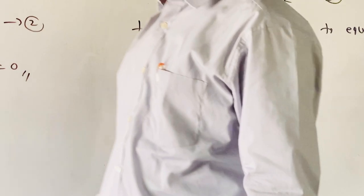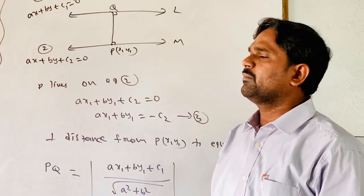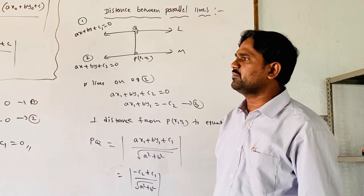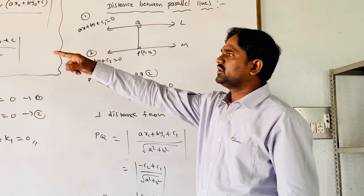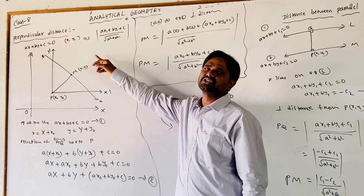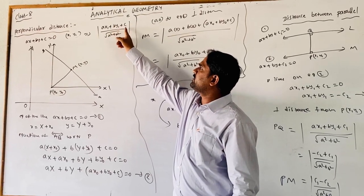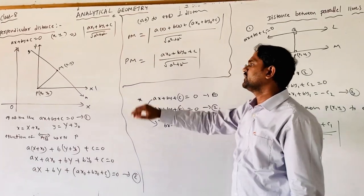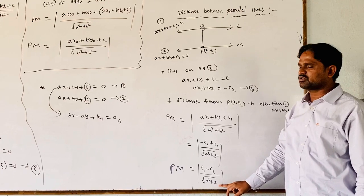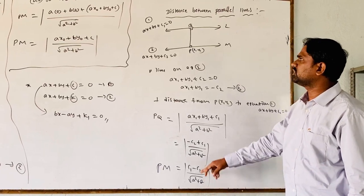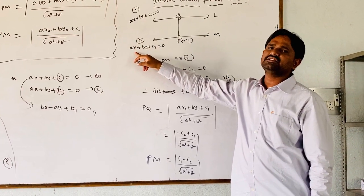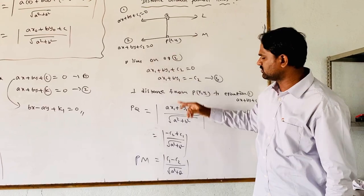In this class, we discussed the distance between two parallel lines and the perpendicular distance from a point to a line. The perpendicular distance from a point to the given line in standard form is: AX1 plus BY1 plus C divided by square root of A squared plus B squared. The distance between two parallel lines is: C1 minus C2 divided by square root of A squared plus B squared, where the two parallel lines have equal X and Y coefficients but different constants.